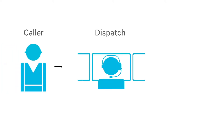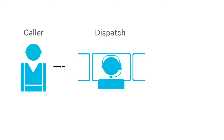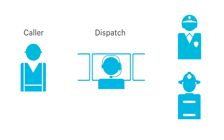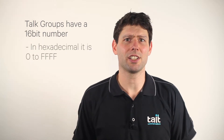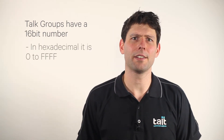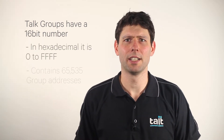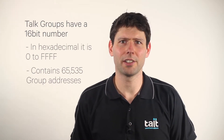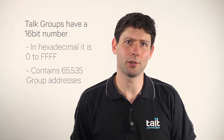P25 allows for group calls to be made to a team of people. This is achieved by addressing the call to a particular talk group rather than an individual radio. Talk group numbers have a 16-bit number. In hexadecimal, that is from 0 to FFFF and contains 65,535 group addresses.